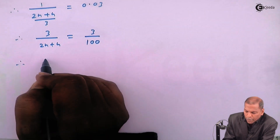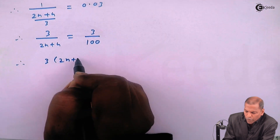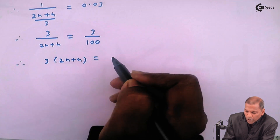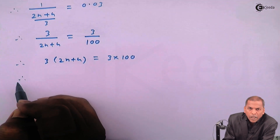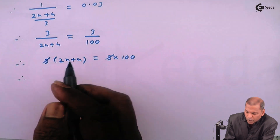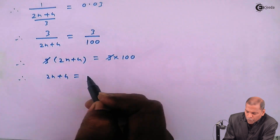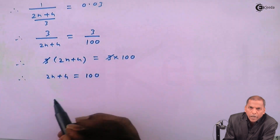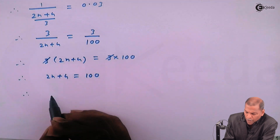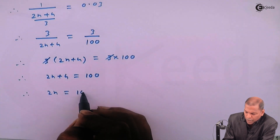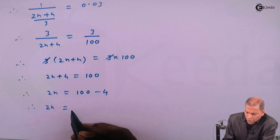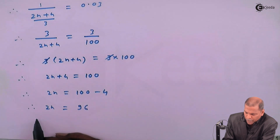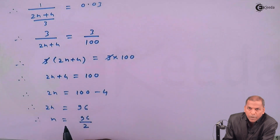On cross multiplying, 3 into (2n+4) equals 3 into 100. Canceling 3 from both sides, we get 2n+4 equals 100. Therefore 2n equals 100 minus 4, so 2n equals 96.